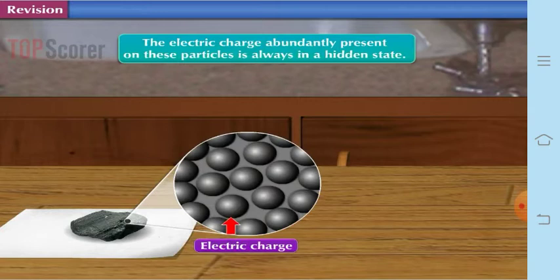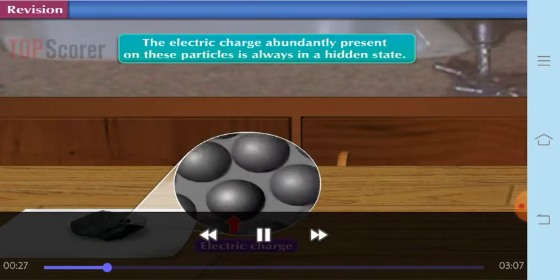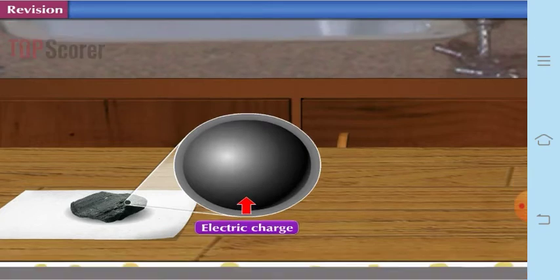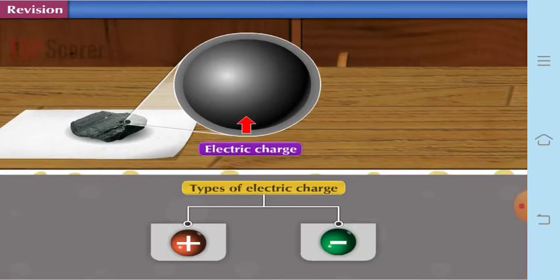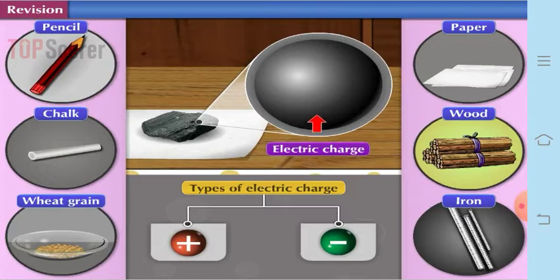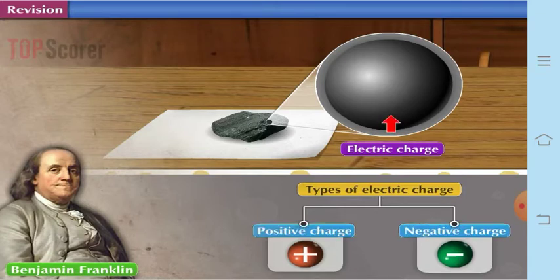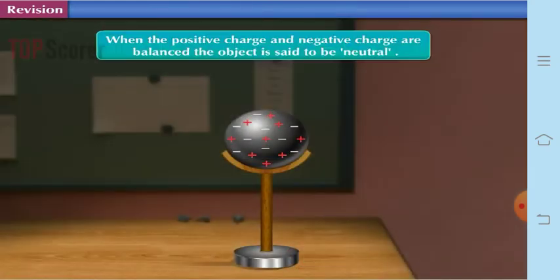The electric charge abundantly present on these particles is always in a hidden state. That means we are unable to notice these electric charges because they are neutral. Neutral in the sense there are two different types of electric charges: positive charges and negative charges. Benjamin Franklin was the renowned scientist who said that there are positive and negative charges.